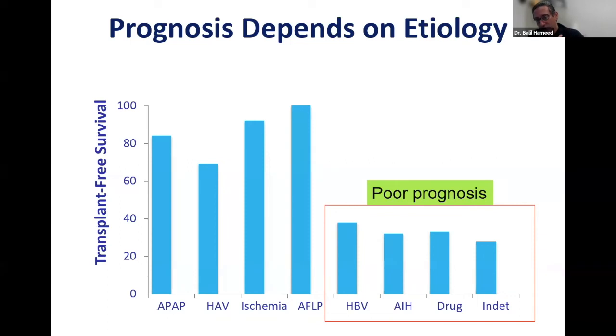However, if someone develops acute liver failure secondary to hepatitis B, autoimmune hepatitis, other drug-induced liver injury besides acetaminophen, or if the cause is indeterminate, these patients have poor prognosis — only 30 to 40% transplant-free survival depending on etiology. Therefore, it's important to know the cause of acute liver failure.